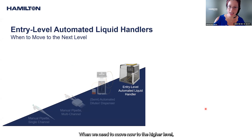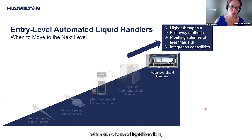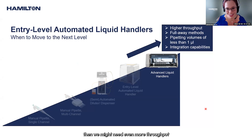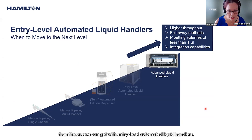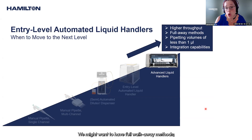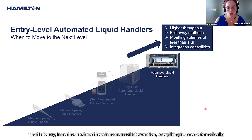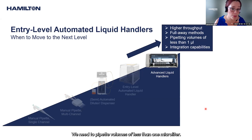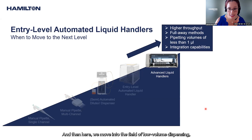When we need to move to the higher level of advanced liquid handlers, we might need even more throughput than entry-level automated liquid handlers can provide. We might want fully walk-away methods with no manual intervention, or we need to prepare volumes of less than one microliter — which moves us into the field of low volume dispensing.